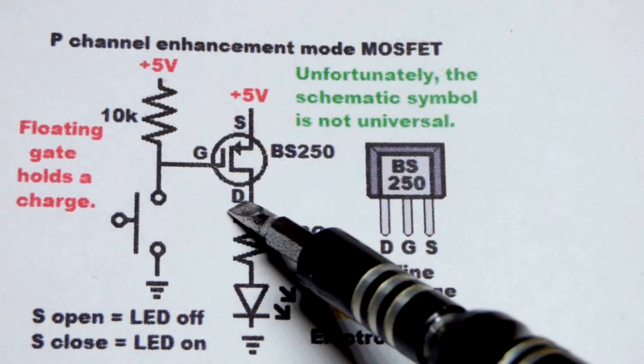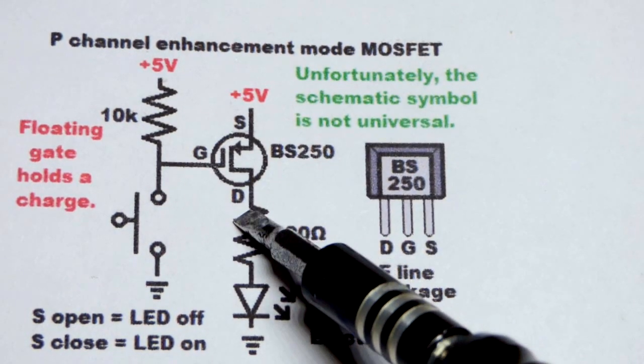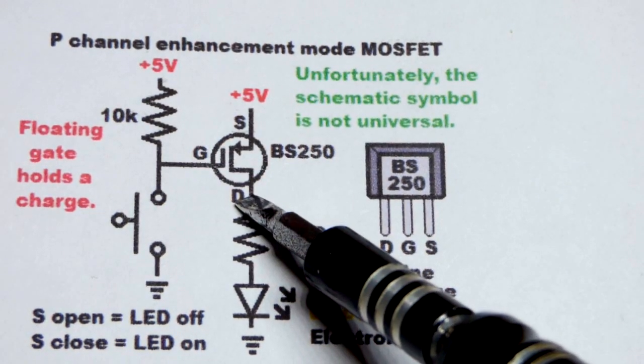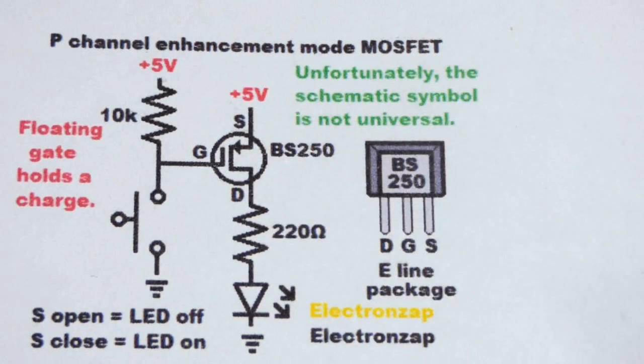Also, you're not going to see the source, gate, and drain. I forgot to write those words out. So S for source, G for gate, and D for drain right there. You probably won't see those on the schematic.